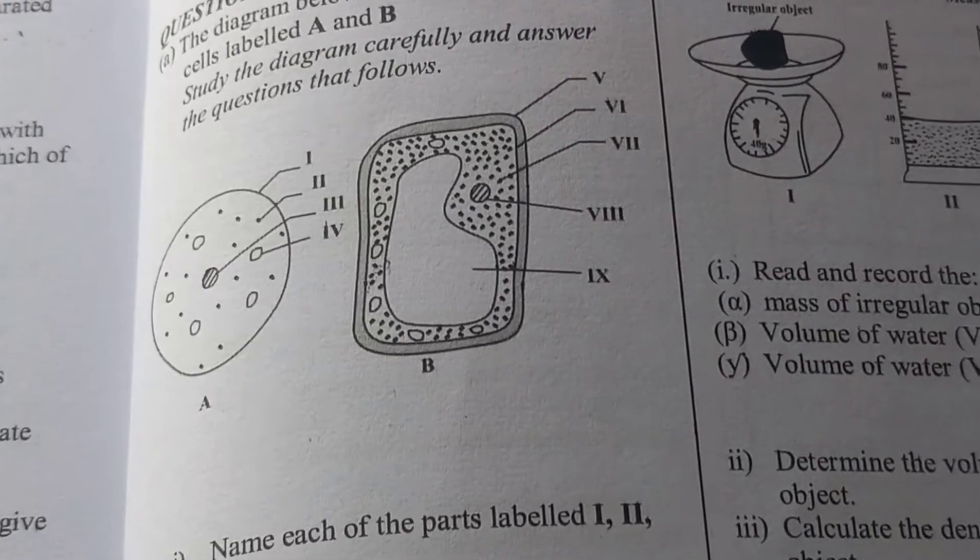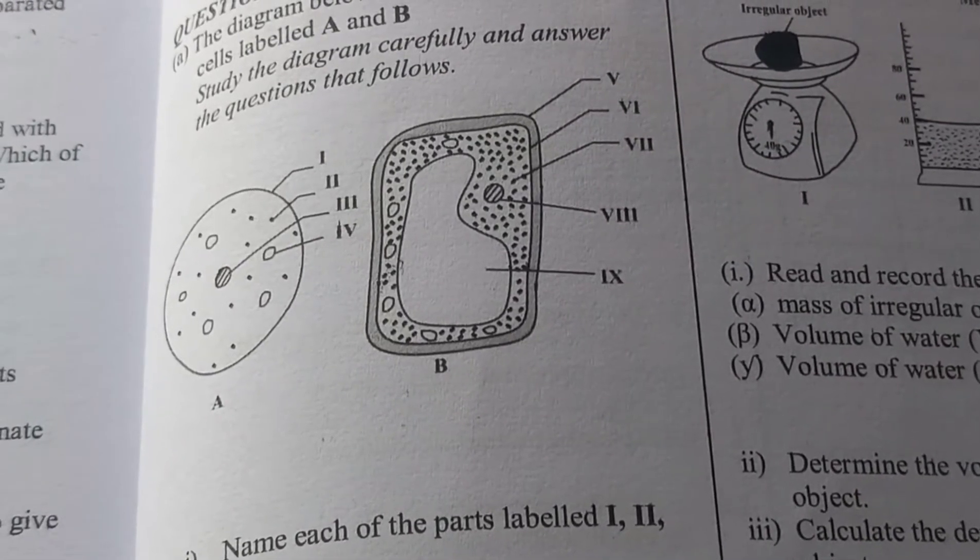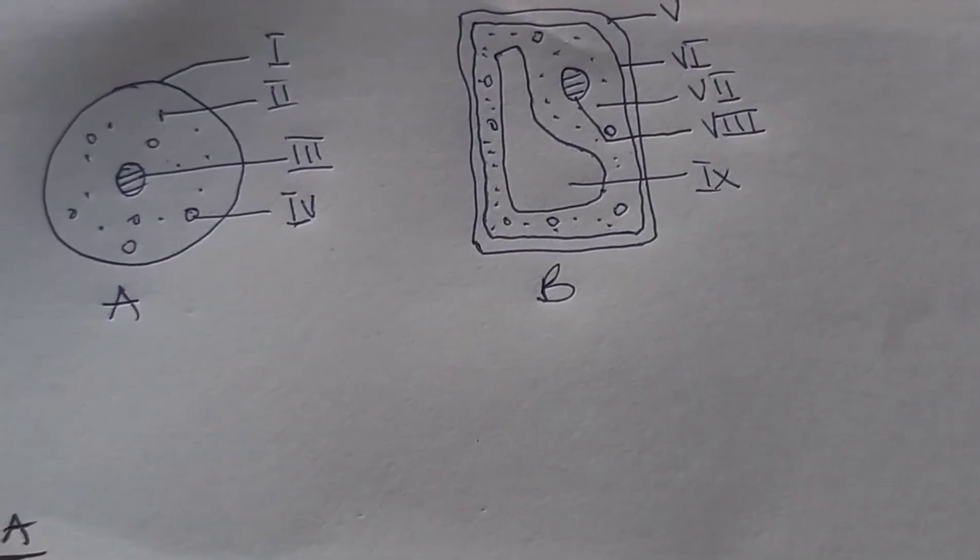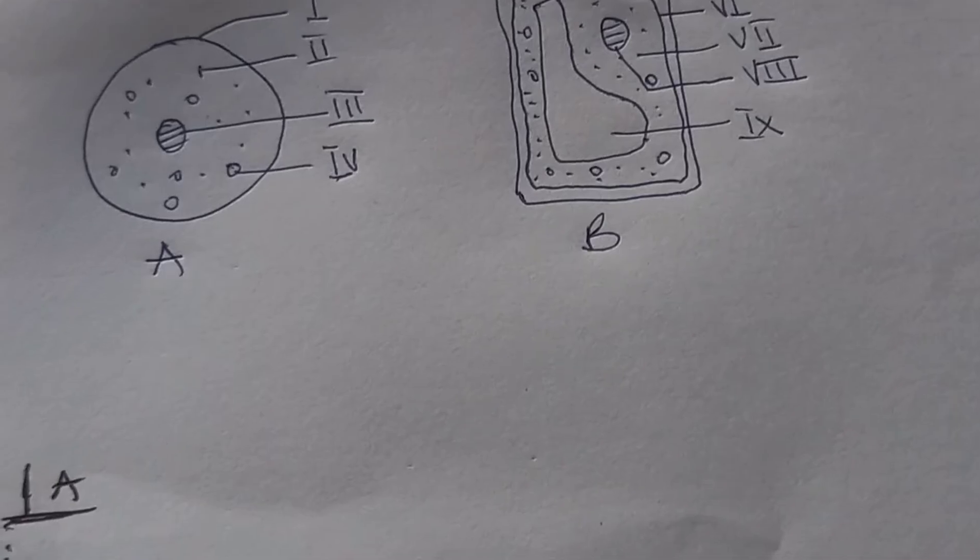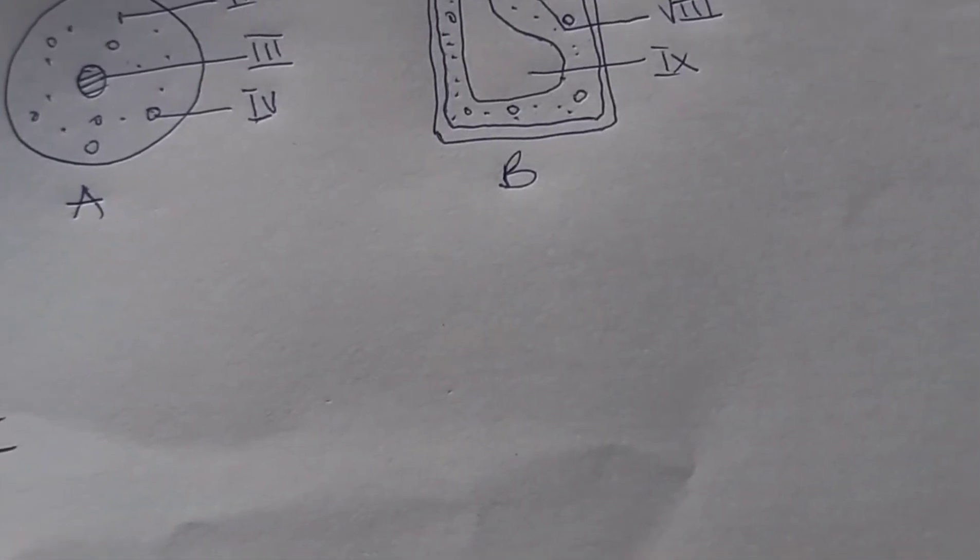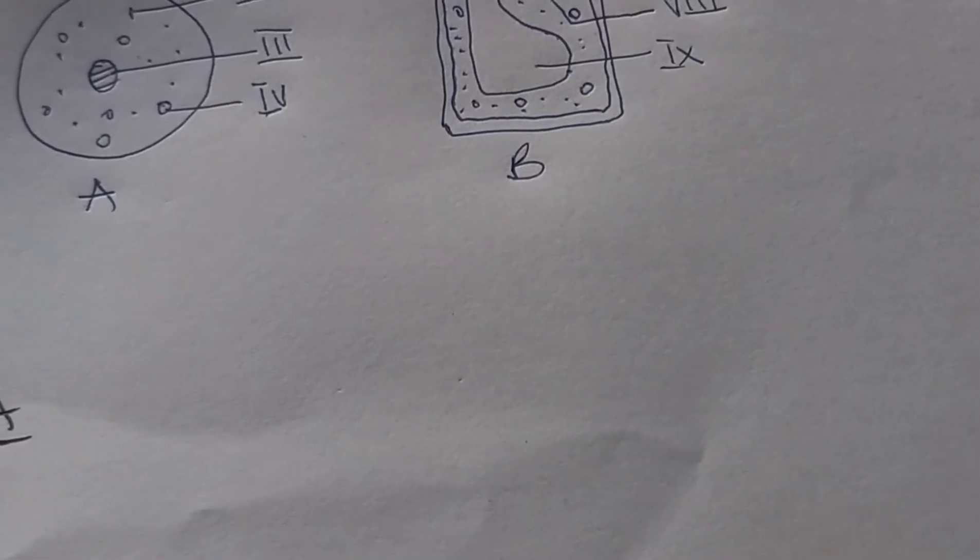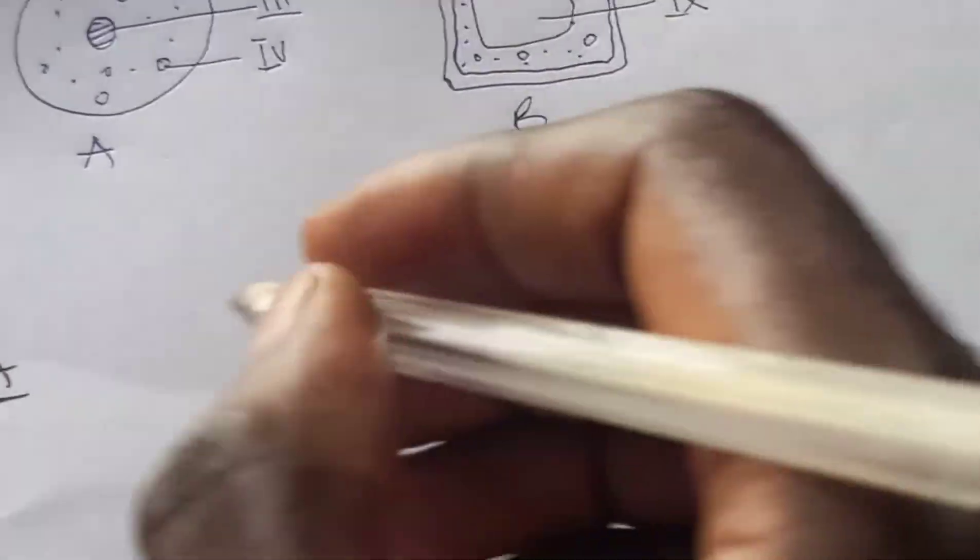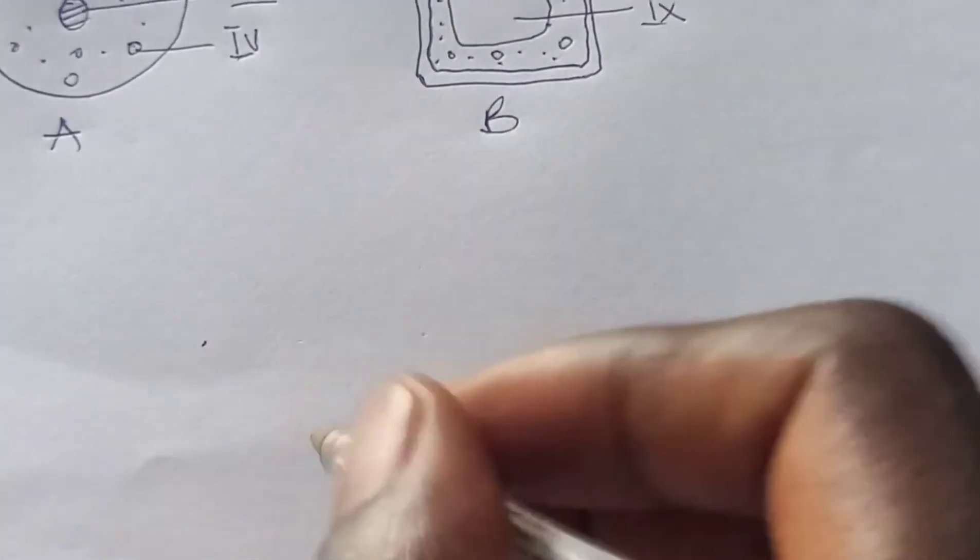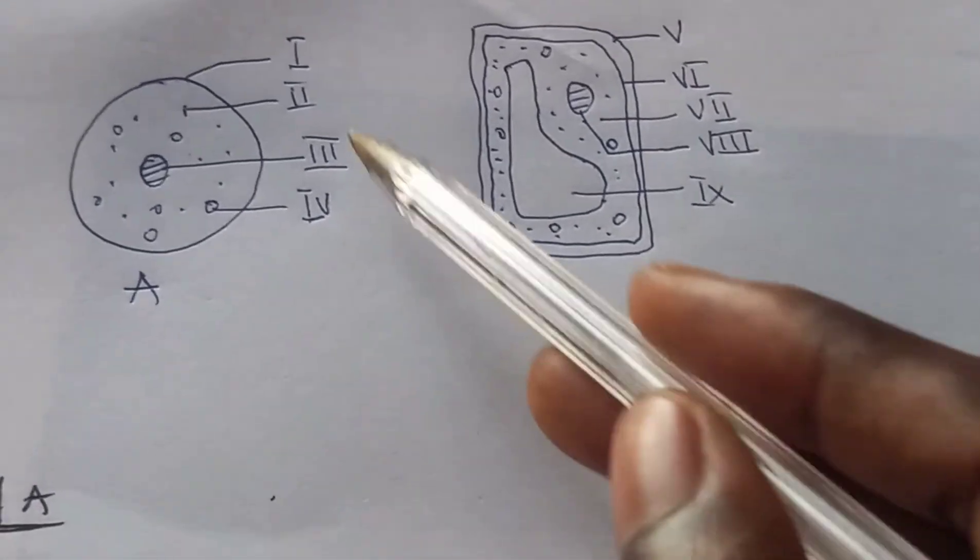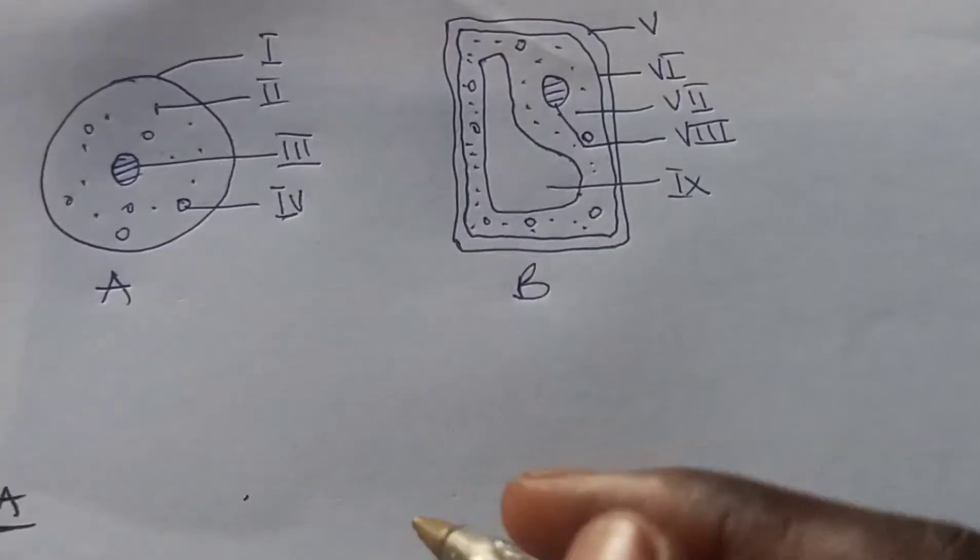Now it's time to solve the question itself. Question 1a(i) says label I, II, III, and IV. So I here is the cell membrane.